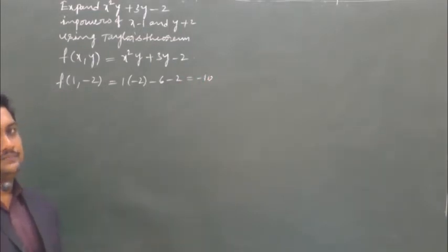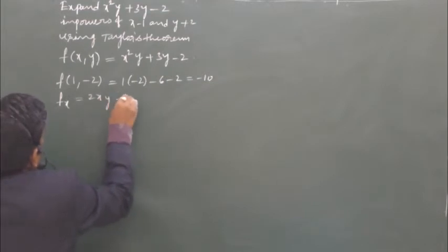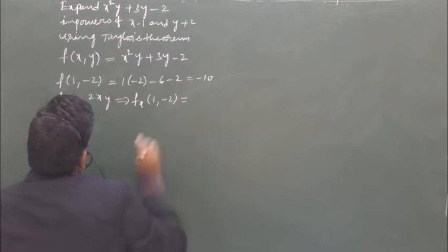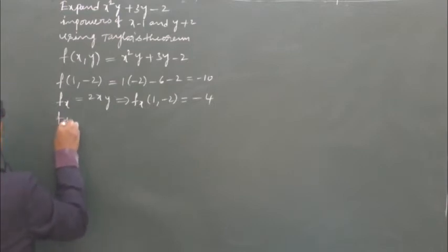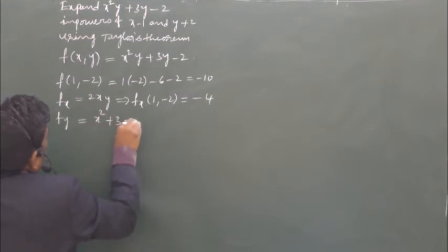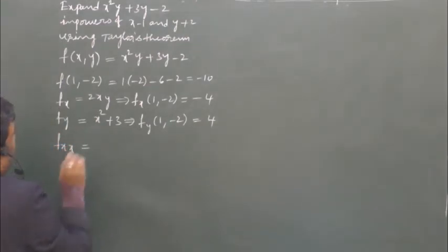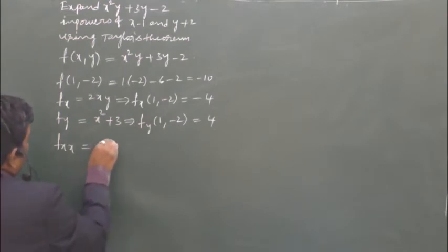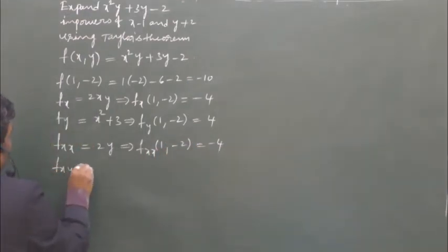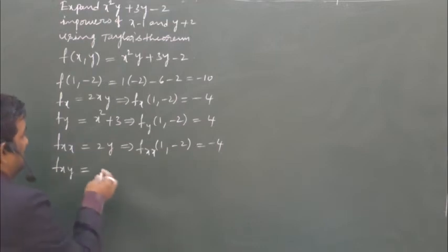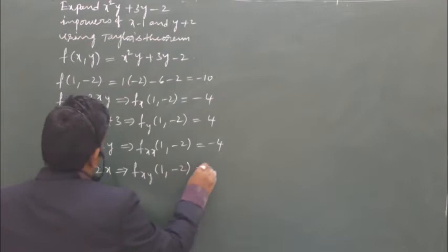The next term involves fx. fx = 2xy, so fx(1,-2) = 2·1·(-2) = -4. Next we need fy = x² + 3, so fy(1,-2) = 1 + 3 = 4. Now fxx is the derivative of fx with respect to x, which is 2y. fxx(1,-2) = 2·(-2) = -4. fxy is the derivative of fx with respect to y, which is 2x. fxy(1,-2) = 2·1 = 2.